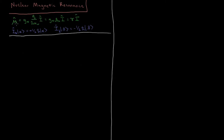So we've got this magnetic moment, this magnetic dipole, and the potential energy of a magnetic dipole interacting with a magnetic field is going to equal the negative dot product of the magnetic dipole mu and the magnetic field B. For the rest of this video we're going to assume that the magnetic field exists only in the Z direction, which is a choice we are free to make in quantum mechanics — we're free to pick an axis like that.